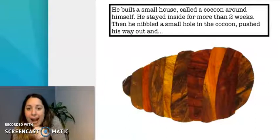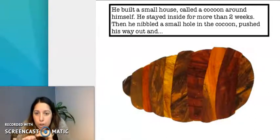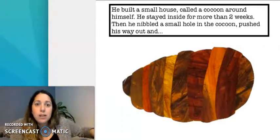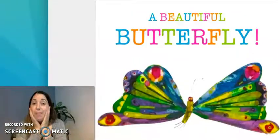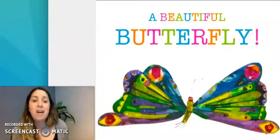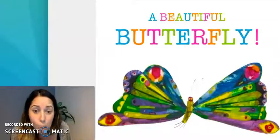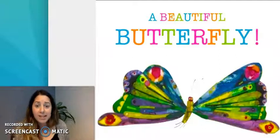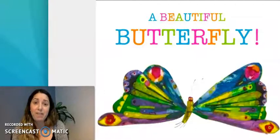Then, he nibbled a small hole in the cocoon, pushed his way out, and do you know what happens now? A beautiful butterfly. A very big, beautiful, colorful butterfly with a lot of colors. Purple, green, blue, orange. What else? Brown, yellow. I can see a lot of colors. A beautiful, colorful butterfly.